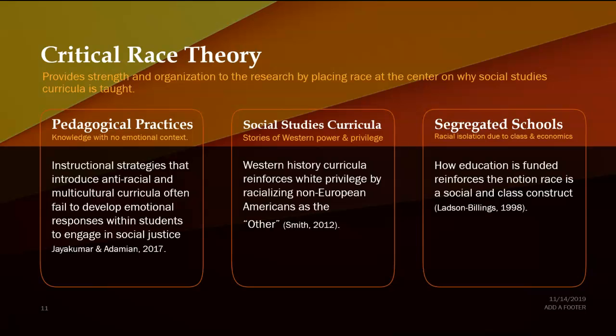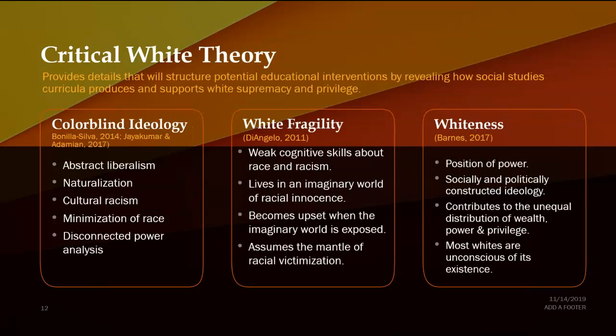School segregation is largely due to how our schools are funded. Critical white theory will help structure potential educational interventions by revealing how social studies curricula produces and supports white supremacy and privilege. We will examine the colorblind frame and the ideology behind it, the components of white fragility and what that looks like, and the whole concept of whiteness in society — how it is socially and politically constructed and really has very little to do with skin color.